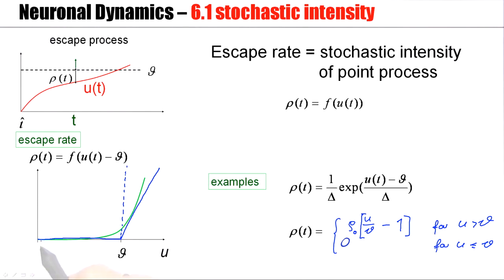Basically, the escape rate is close to 0 as long as we stay below threshold. Then it's very, very big if we're above threshold, if the membrane potential is larger than θ.